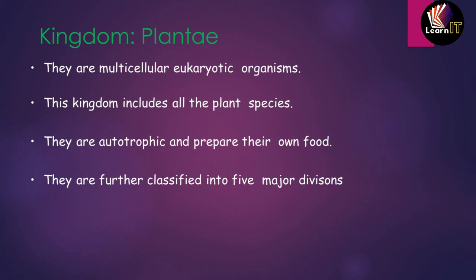Kingdom Plantae is further divided into five divisions: Thallophyta, Bryophyta, Pteridophyta, Gymnosperms, and Angiosperms. These are the five kinds of divisions for kingdom Plantae.